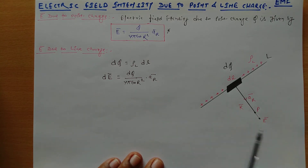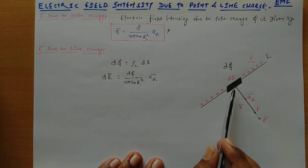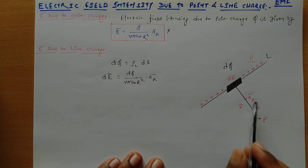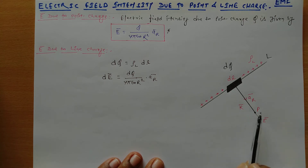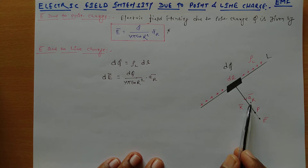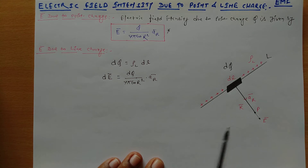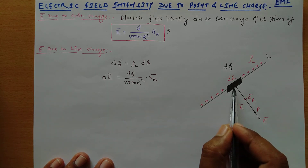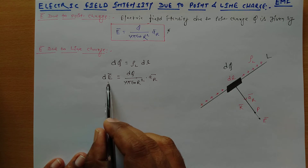Now, what is R? R is basically telling about the distance of the point P from the origin — where we need to find the value of electric field intensity. We can also say it tells about the position vector. And ar is the unit vector; it shows the direction where we are going to find the electric field intensity. So r represents the distance and ar represents the unit vector at the particular point P where we need to find the electric field intensity.